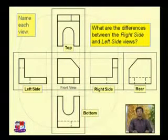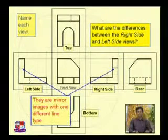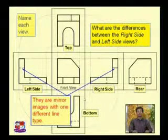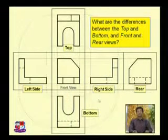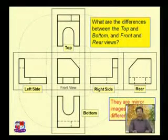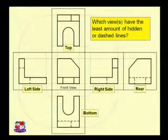This is the bottom view. The differences between the right side view and the left hand side view are that they are mirror images with one different line type — here a full line and there a dotted line. Similarly, the top view and bottom view, and the front view and rear view, are mirror images with different line types.